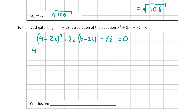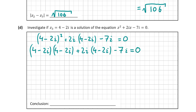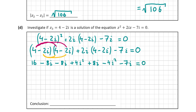That gives us 4 minus 2i squared plus 2i times 4 minus 2i minus 7i. Now 4 minus 2i squared is 4 minus 2i multiplied by 4 minus 2i. Expanding: 4 times 4 gives 16, 4 times minus 2i gives minus 8i, minus 2i times 4 gives minus 8i, and minus 2i times minus 2i gives plus 4i squared. Then for 2i multiplied by 4 minus 2i: 2i times 4 is 8i and 2i times minus 2i is minus 4i squared. We still have the minus 7i, and this should equal zero if it is a solution.